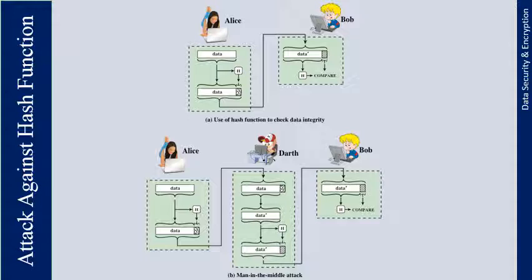Message authentication is a mechanism or service used to verify the integrity of a message. Message authentication assures that the data received are exactly as sent — there is no modification, insertion, deletion, or replay attack. In many cases there is a requirement that the authentication mechanism ensures that the identity of the sender is valid. When a hash function is used to provide message authentication, the hash value is referred to as a message digest.